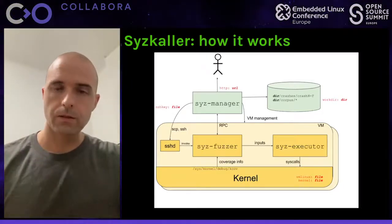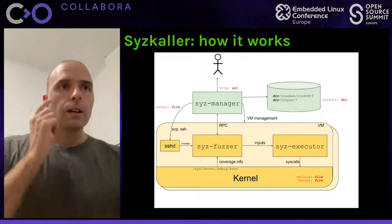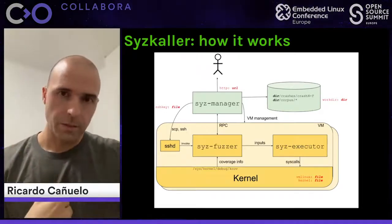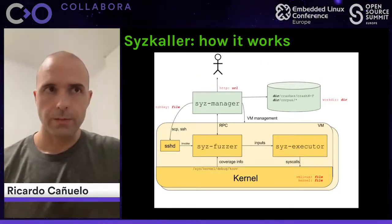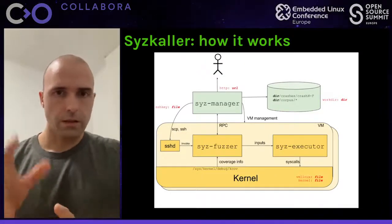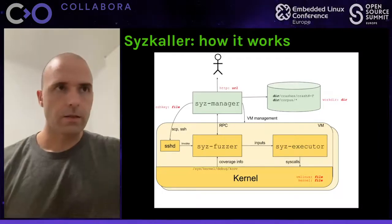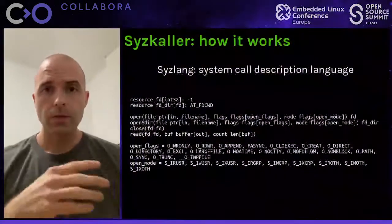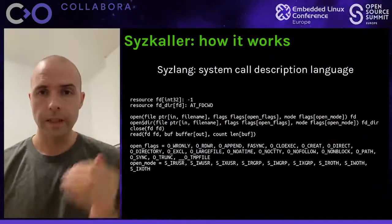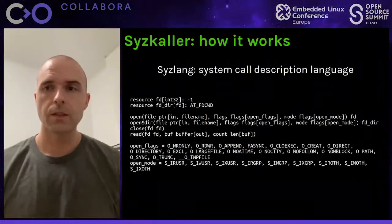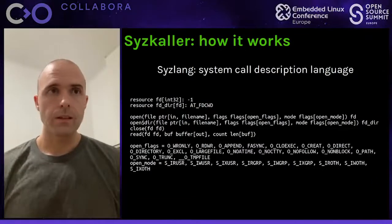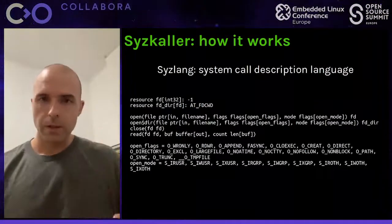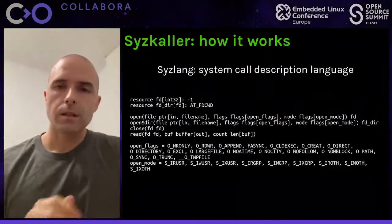Syz-executor also runs in the target machine. It processes the test programs created by syz-fuzzer — accepts them, runs them, and sends the results back to syz-fuzzer. The programs are simply C++ programs generated by syz-fuzzer and are statically built standalone programs. Syzkaller uses a user-defined high-level description of the available system calls, described in a domain-specific language called syzlang. These definitions let Syzkaller generate more thoughtful code using reasonable parameters and usage patterns instead of simply generating random sequences.